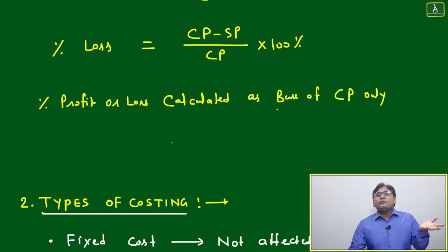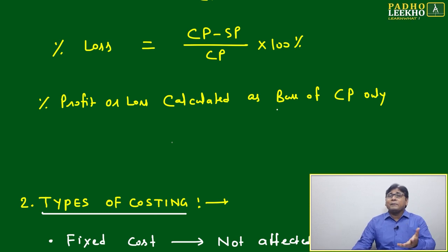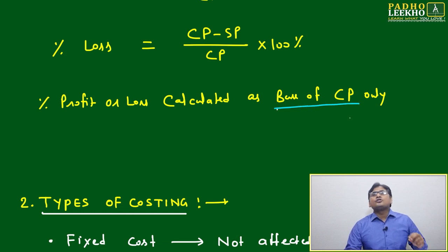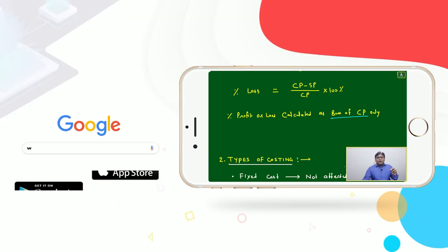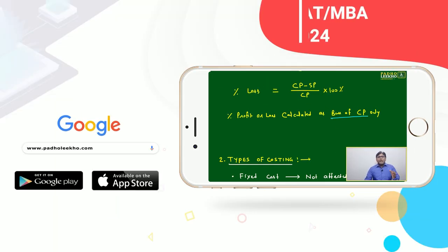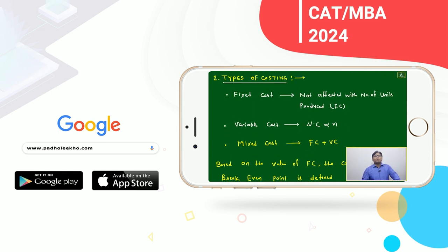Always percentage profit or loss will be calculated as base of cost price only. Means how much you are gaining or losing with respect to your investment, not with respect to your selling. Then this will come like same thing for more.